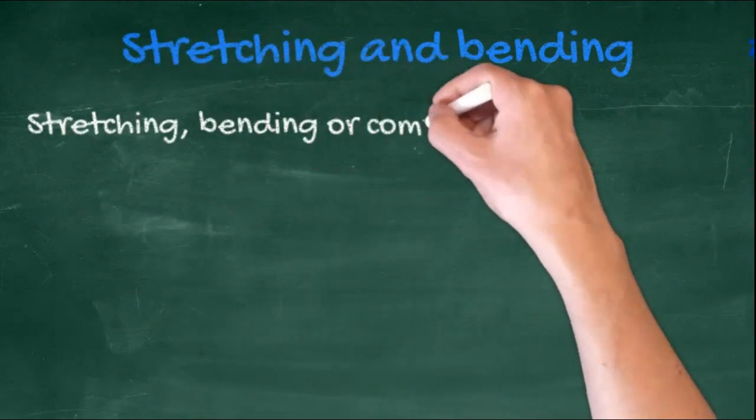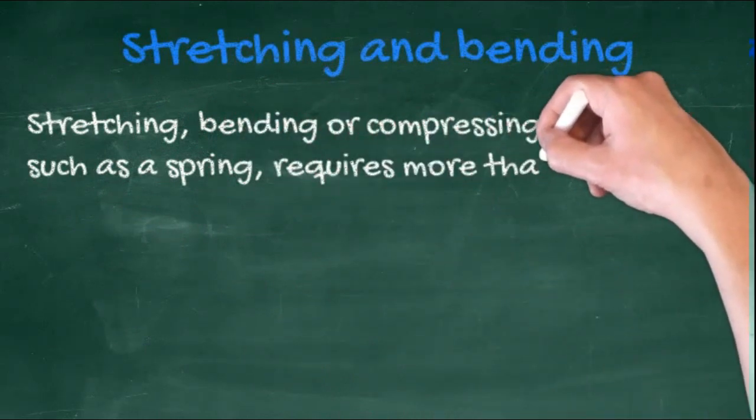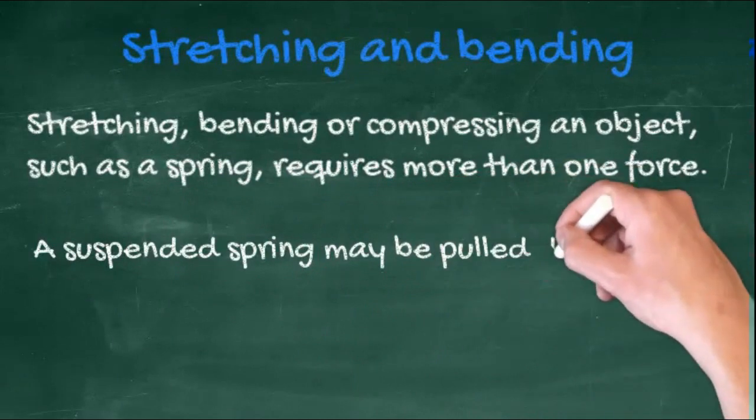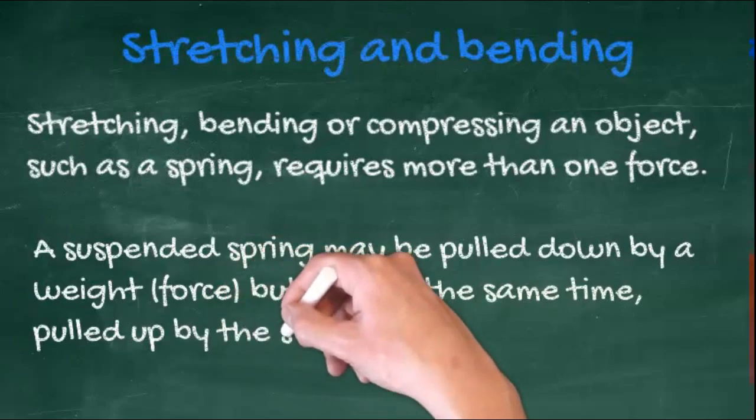Stretching, bending or compressing an object, such as a spring, requires more than one force. A suspended spring may be pulled down by a weight, that's a force, but it is at the same time pulled up by the stand that's supporting it.